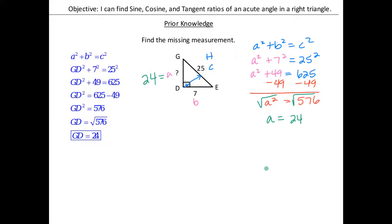In order for us to do sine, cosine, and tangent, we need to have all three sides. For today's exercises, we're going to see a triangle that has two sides and a missing side. So we're going to have to first do the Pythagorean theorem, and then we can use sine, cosine, and tangent. These are like a mix of lessons 1a — where we used the Pythagorean theorem — and 1b — where we used sine, cosine, and tangent with all three sides given.